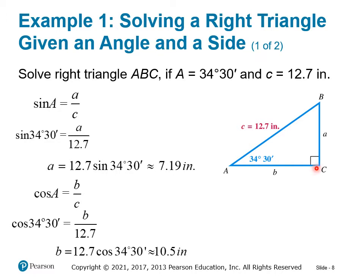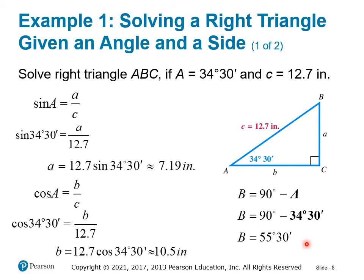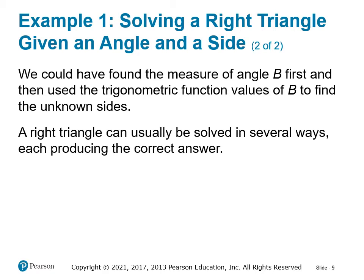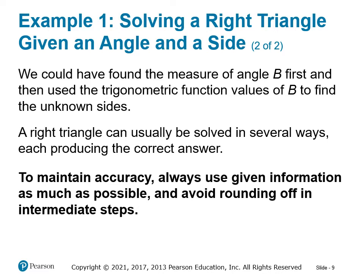Angle C is 90 degrees because it has the square in it. We can find angle B by recognizing that A and B have to be complementary, so B equals 90 minus A, which is 55 degrees 30 minutes. It's always best to use the given information as much as possible instead of calculated information, to avoid rounding errors.